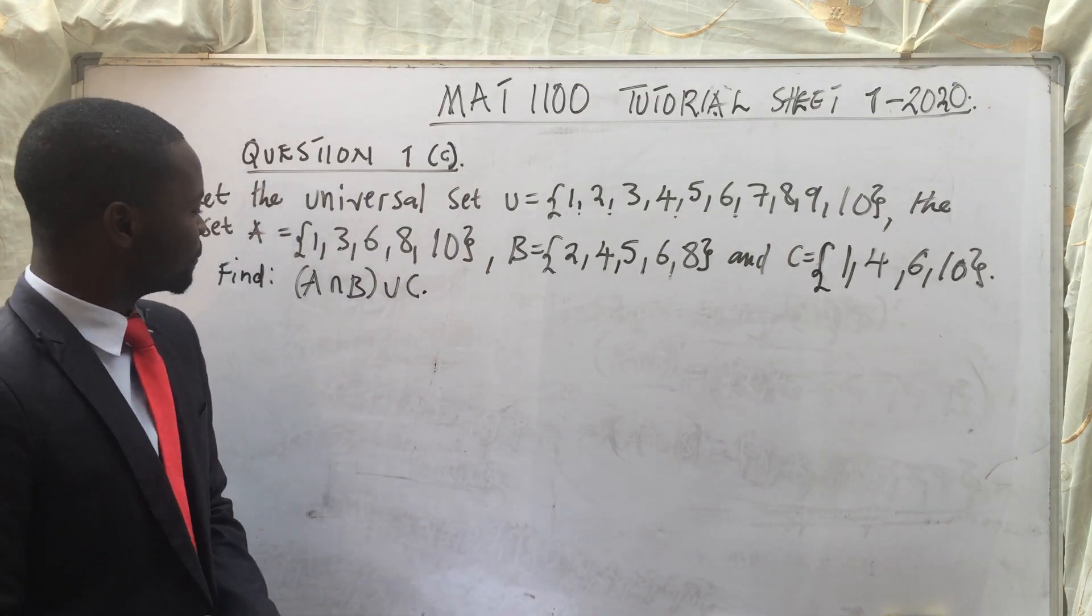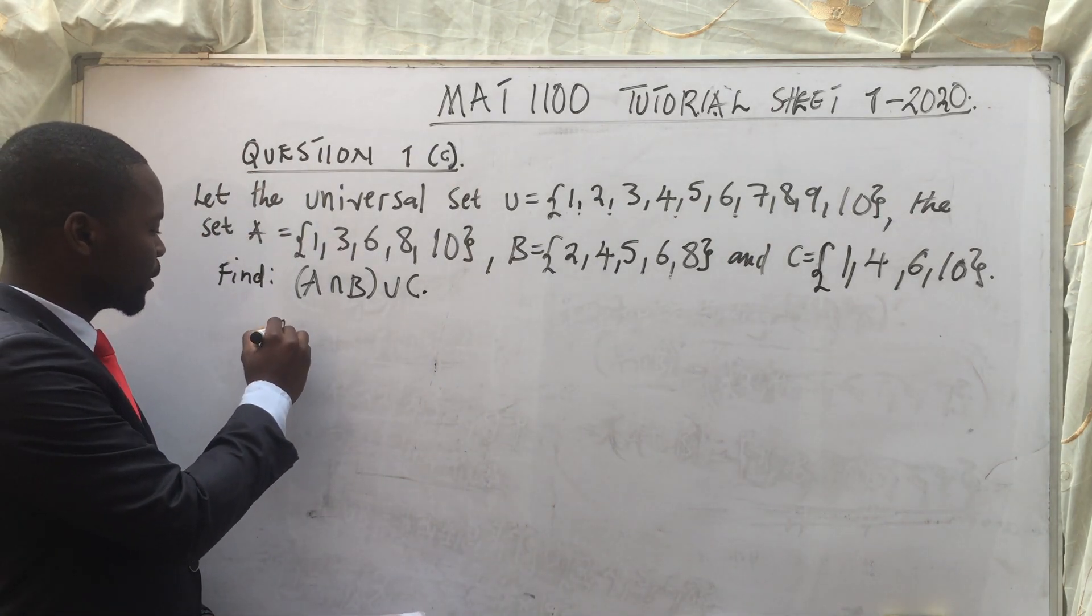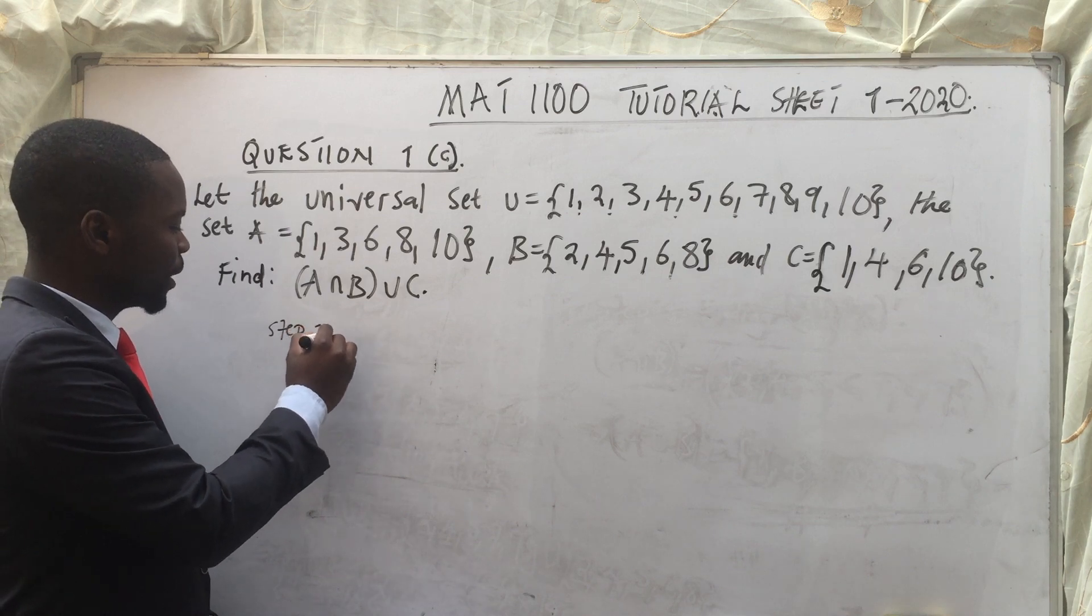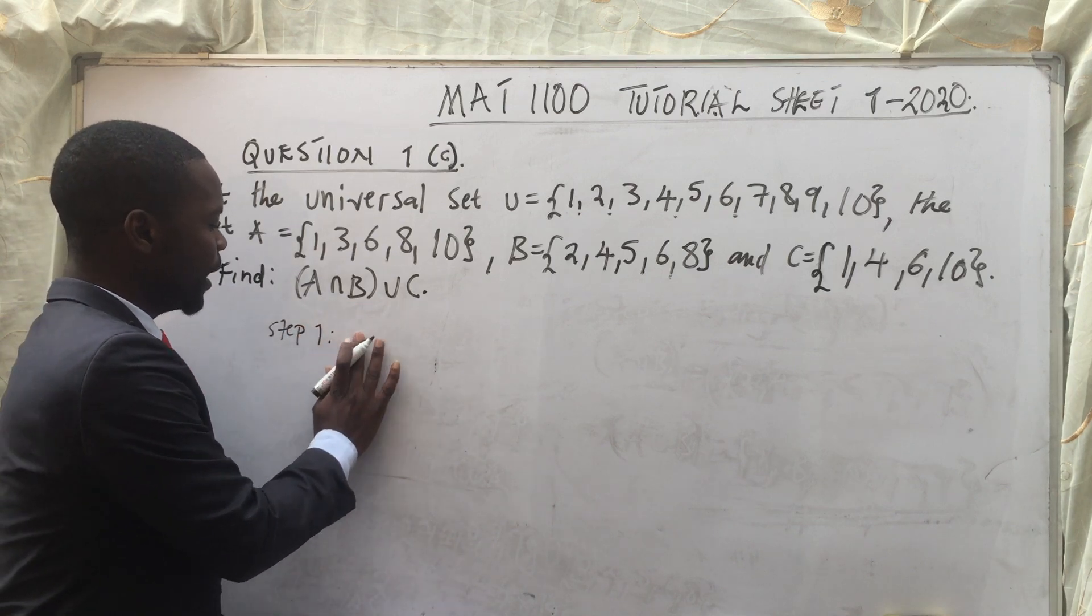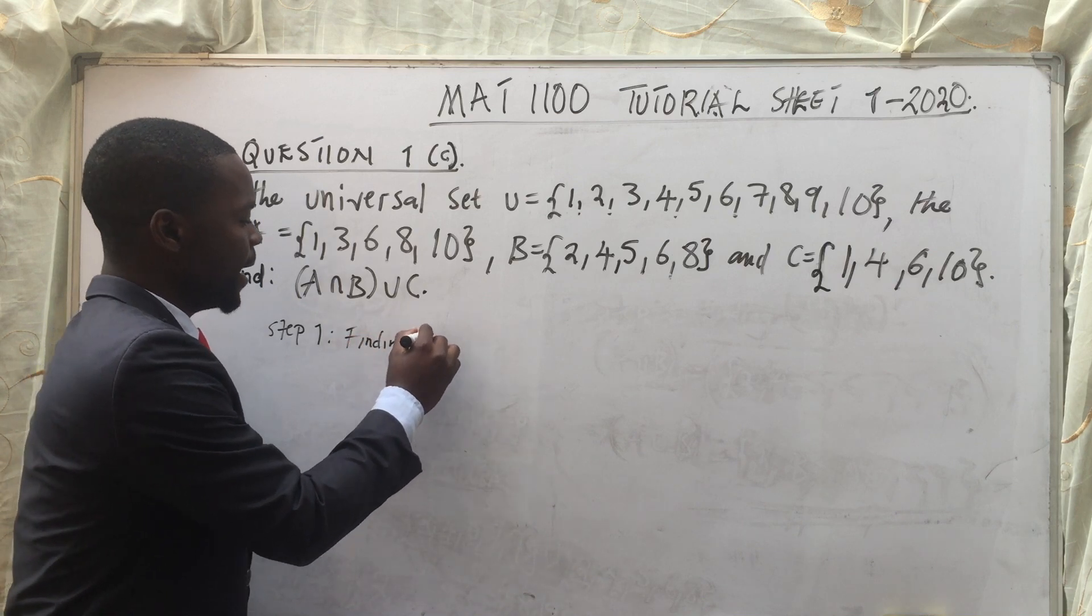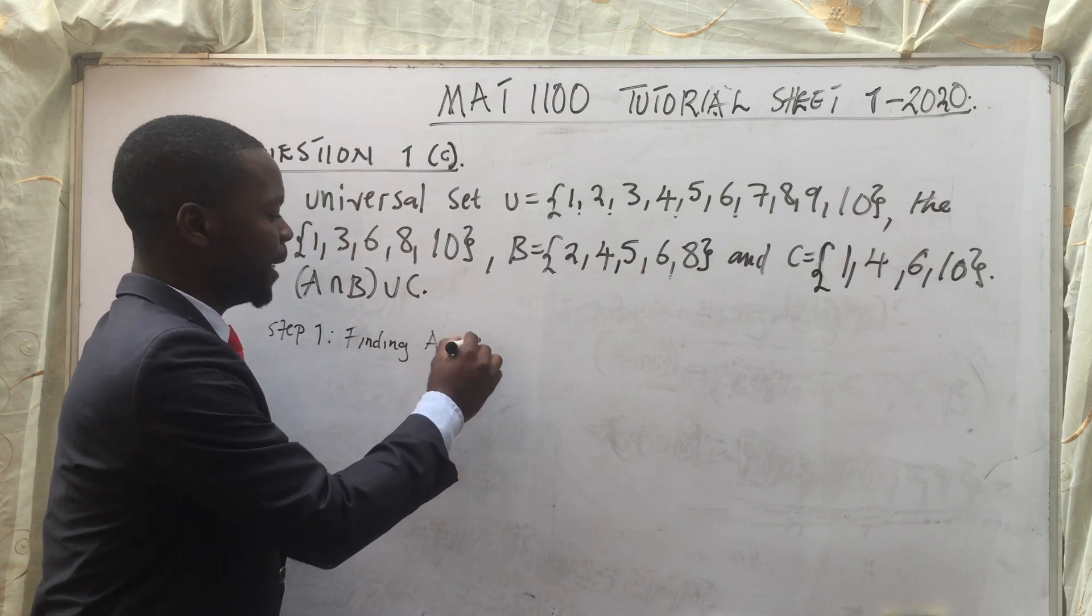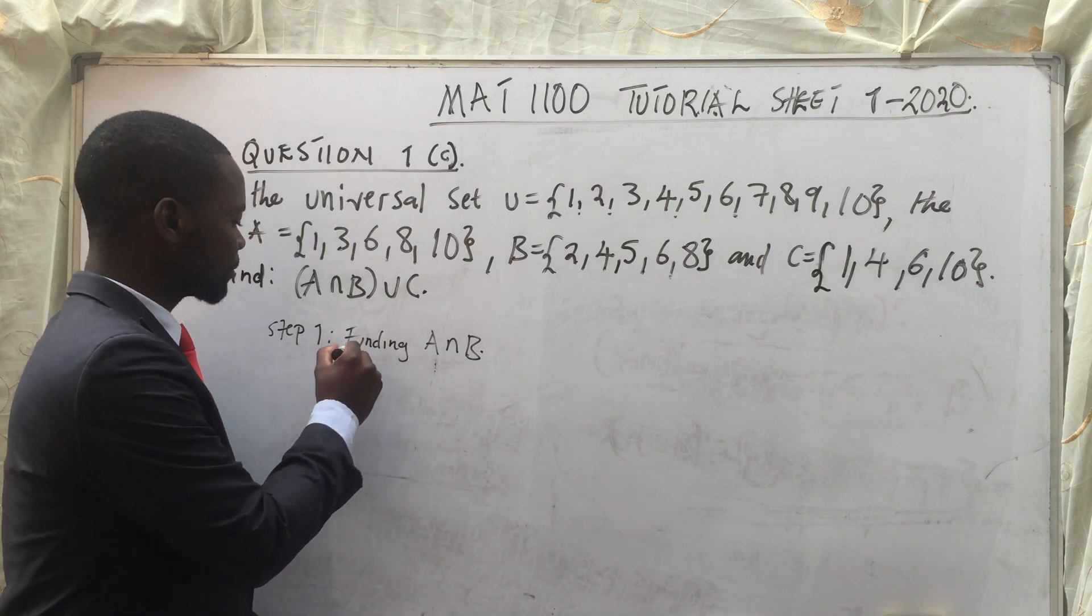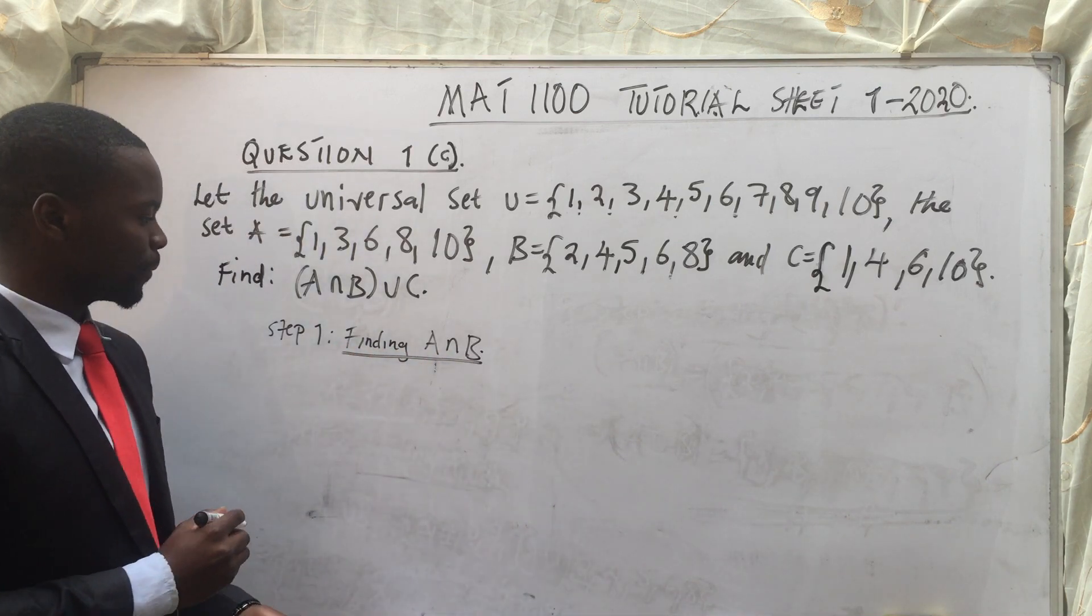Okay, so now let's go to the first step. Step 1. Step 1 is saying, step 1 will be finding A intersection B. Finding A intersection B. This is our step 1.